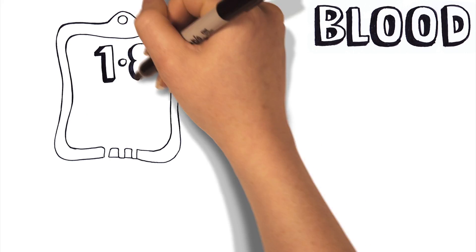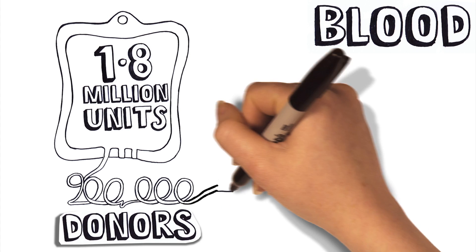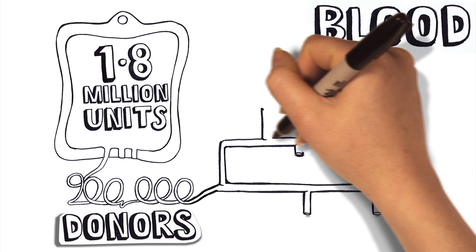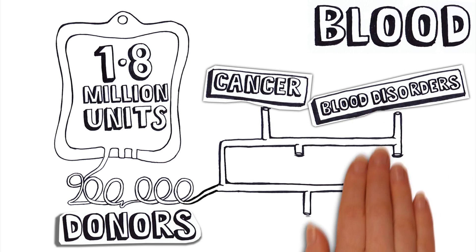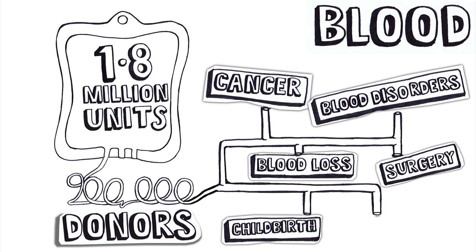Each year we collect about 1.8 million units of blood and platelets from almost 900,000 UK donors. This blood is used to treat critically ill patients whether they've had cancer or other blood disorders, been in an accident, are having surgery or after childbirth.